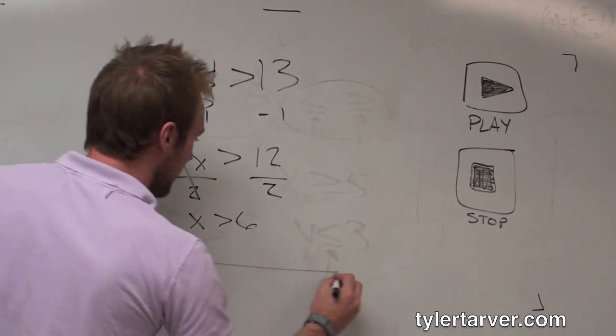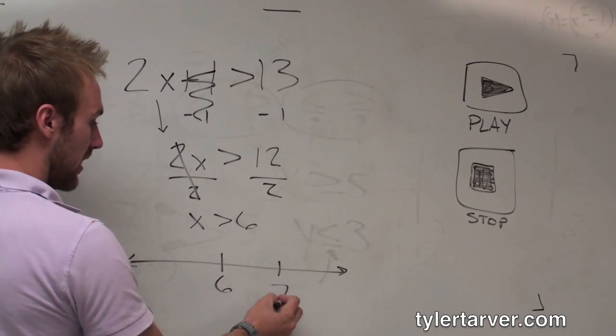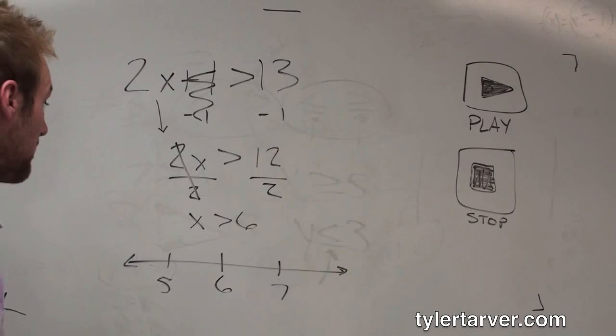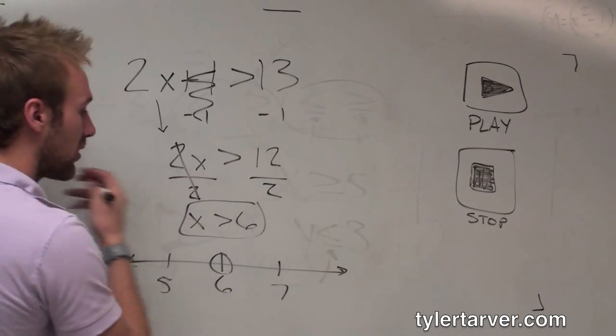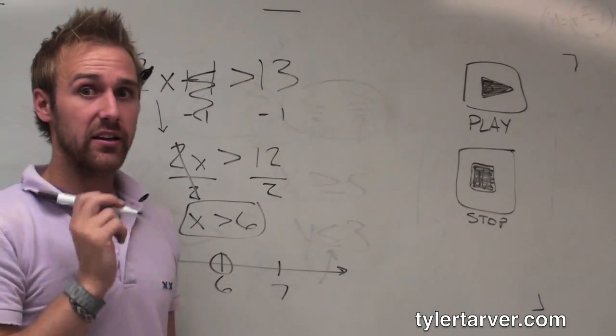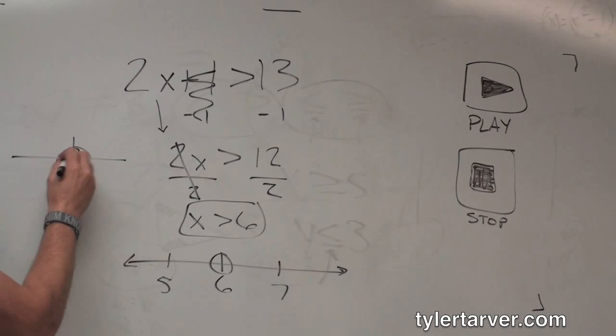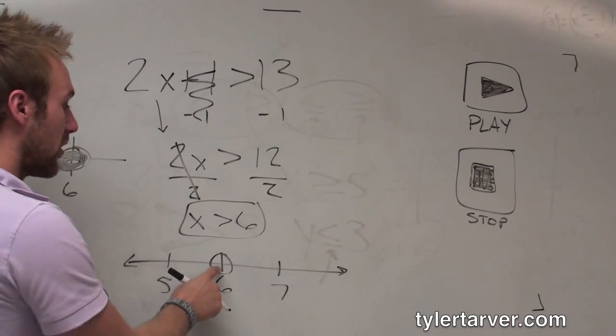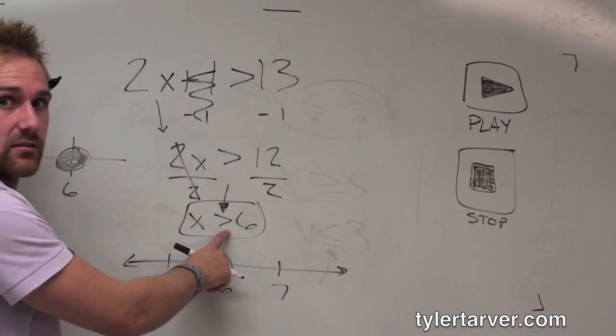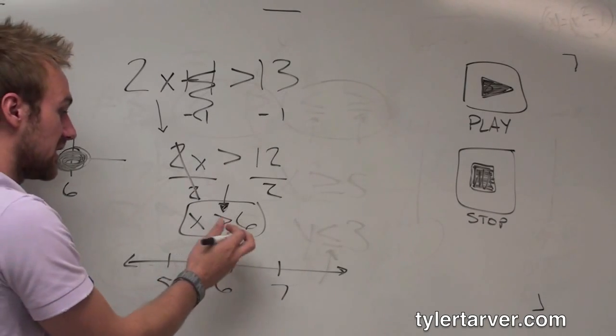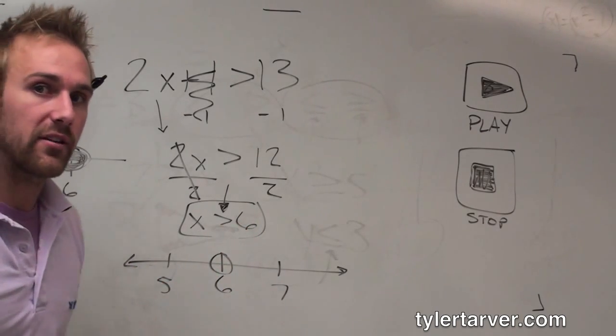Now, in case they want you to graph this, a lot of times they'll have you graph it on a number line. We put our main number on there, which in this case is 6. Put a number bigger, put a number smaller. Now, on that 6, we're going to have a circle. Here's the deal: if, in our final equation, if it can be that number, then you put a filled-in circle. If it cannot be that number, you put an open circle. We know that by looking at our sign. Can it be 6 from what I just explained earlier? No, it can't, because it doesn't have that little line underneath it. If it did, yeah, it would be equal and we'd fill it in. But it can't, so it's an open circle.